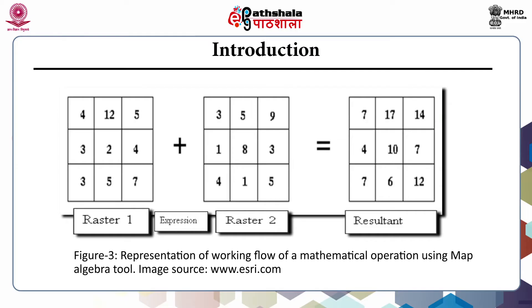For example, this figure represents a workflow of mathematical operations using the map algebra tool. You have two rasters: the first one having certain values in the pixels and the second raster. The expression here is to add these two rasters — first and second — and the resultant would be a new raster in which each pair of corresponding pixels are added together, so that the final output has pixels that are the sum of the two rasters.